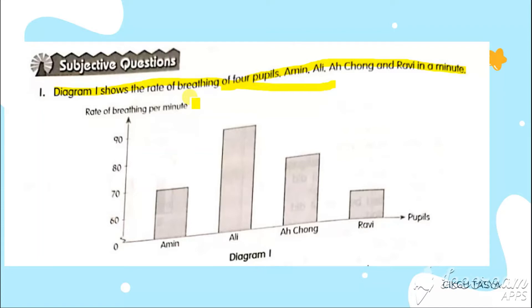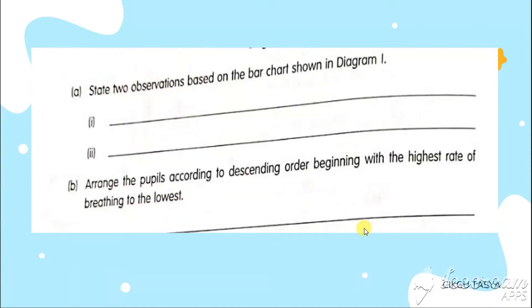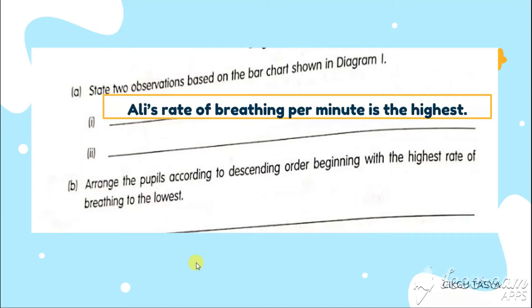Set two observations based on the bar chart shown in the diagram. You can say that Ali has the highest rate of breathing, Achong has the second highest rate of breathing, Ravi has the lowest rate of breathing. How you do is, you tell what you saw in the data. Teacher put, Ali's rate of breathing per minute is the highest. Ravi's rate of breathing per minute is the lowest. They ask for observation. Observation means what you observe.